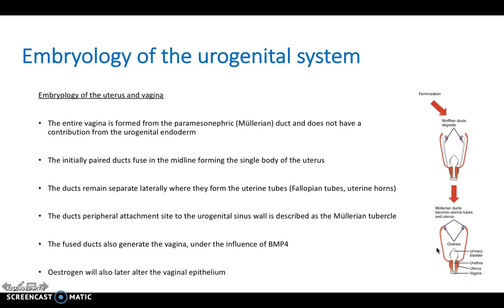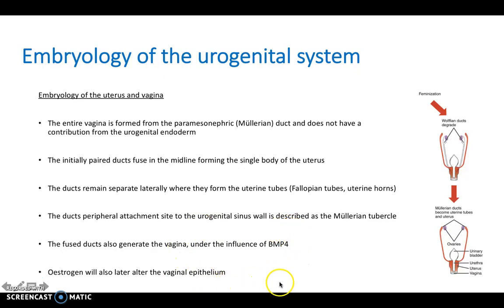For the embryology of the uterus and vagina: the entire vagina is formed from the paramesonephric or Müllerian duct, with no contribution from the urogenital endoderm. The initially paired ducts fuse in the midline forming the single body of the uterus, while the ducts remain separate laterally to form the uterine tubes and uterine horns. The ducts' peripheral attachment to the urogenital sinus wall is described as the Müllerian tubercle. The fused ducts also generate the vagina under the influence of BMP4, and estrogen later alters the vaginal epithelium.